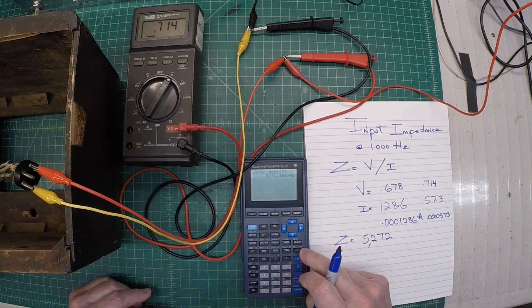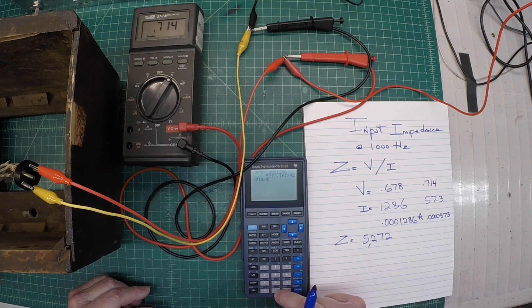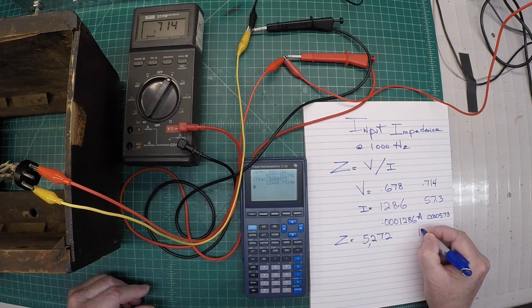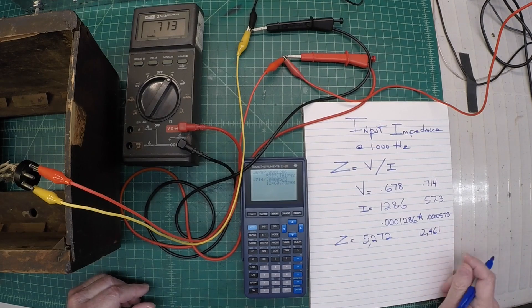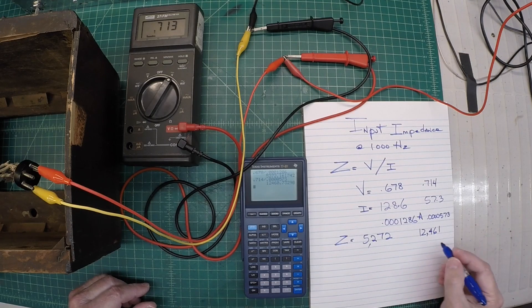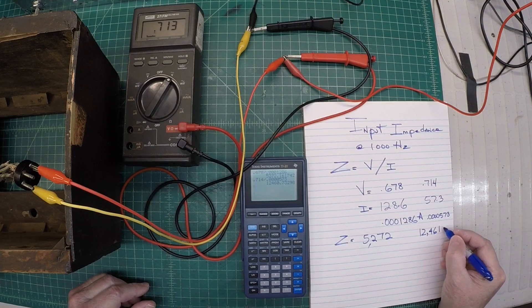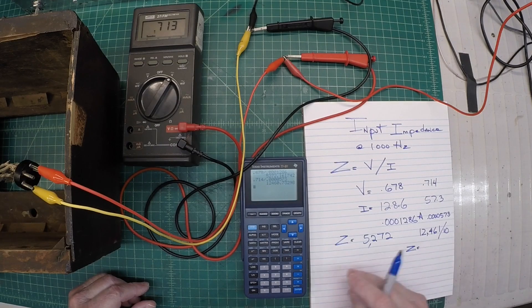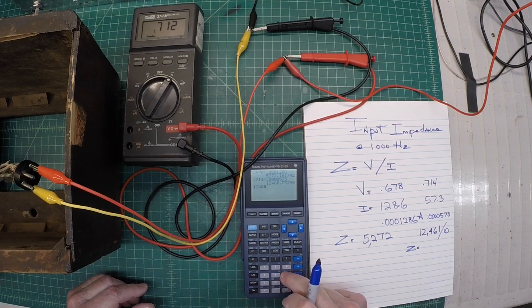So let's do the math there. We'll take the 0.714, we'll divide by 0.0000573. And that comes out to 12,461. So we'll take note of that. Now what I need to do is divide that by 10, because we have a 10 ohm resistor. So we'll divide by 10.